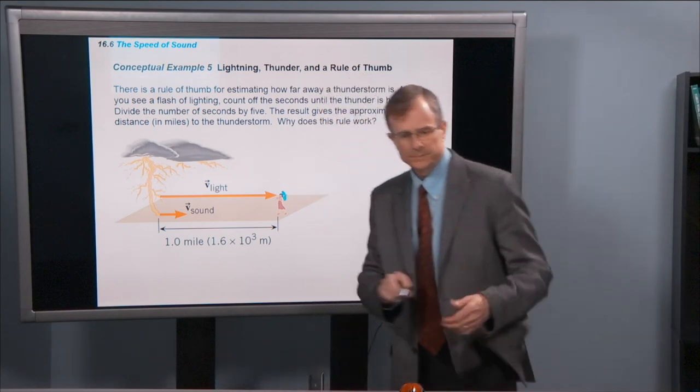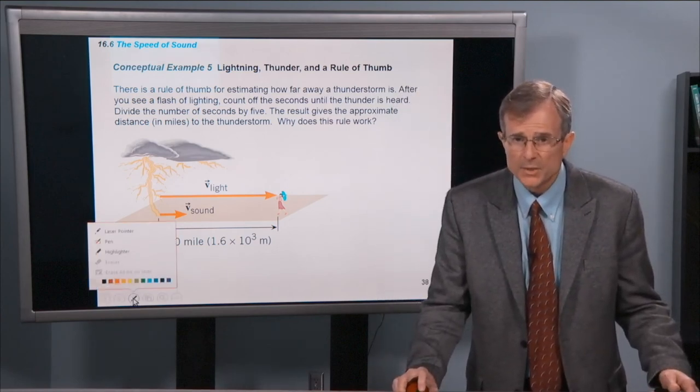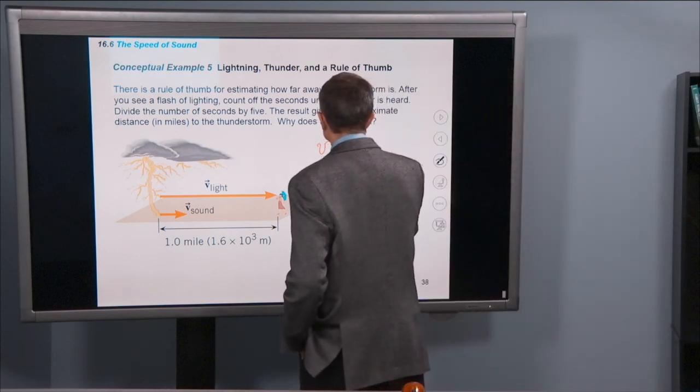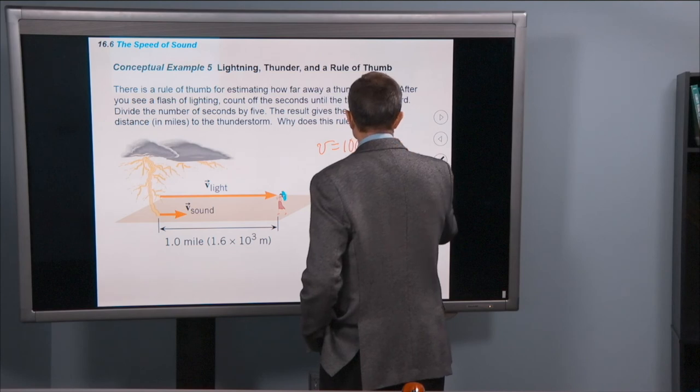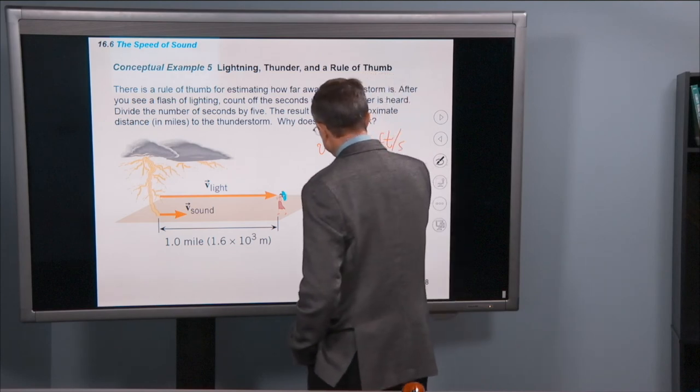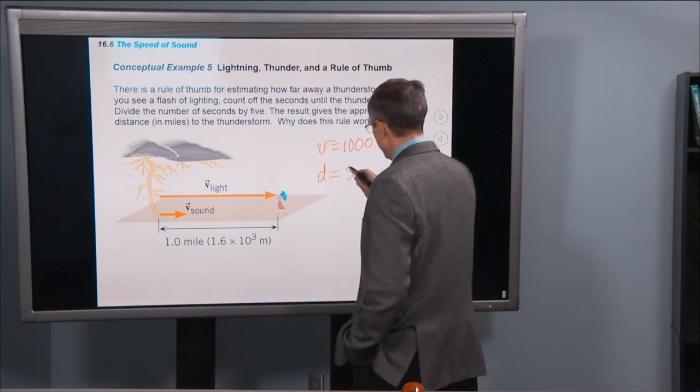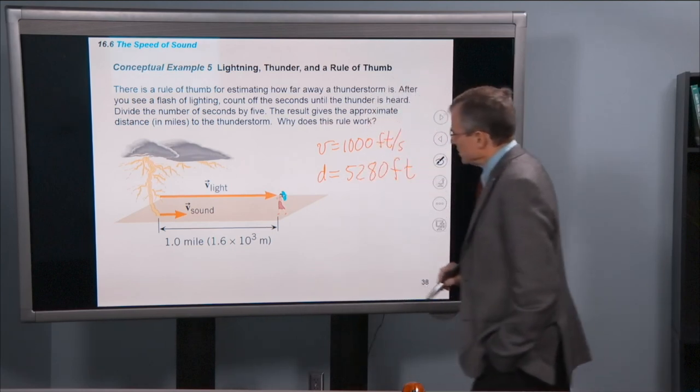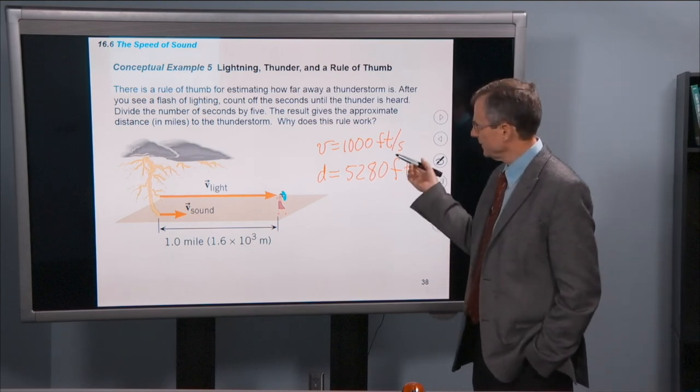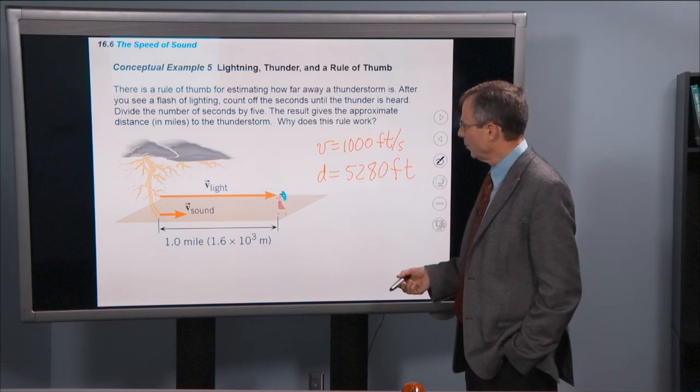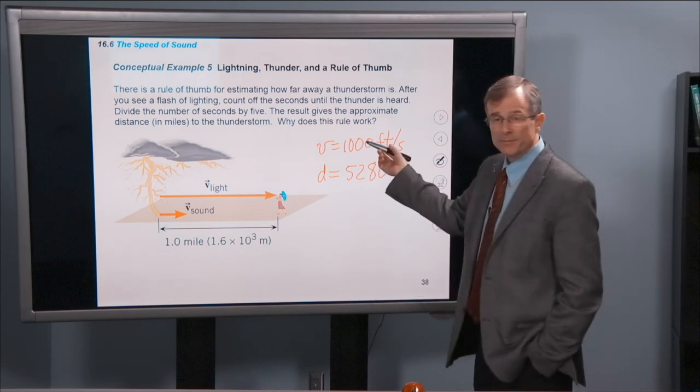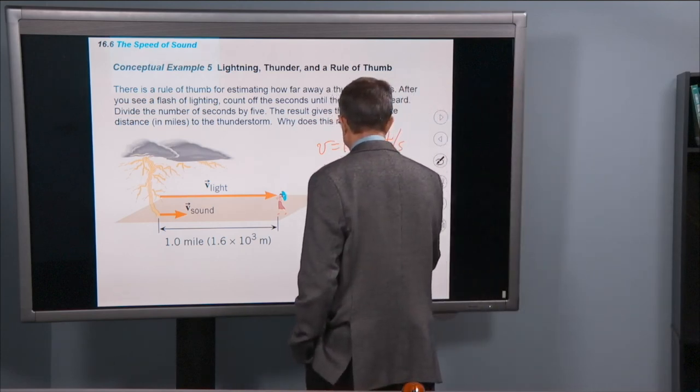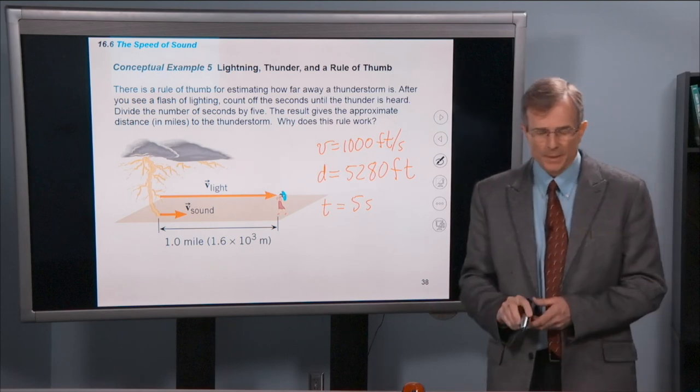A mile is about 5,000 feet, 5,280 feet. So how long does it take for sound to travel one mile? Going a thousand feet per second, you need 5,000 feet to go a mile. So it takes about five seconds for sound to travel one mile.